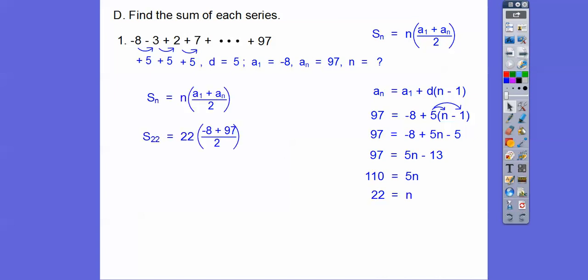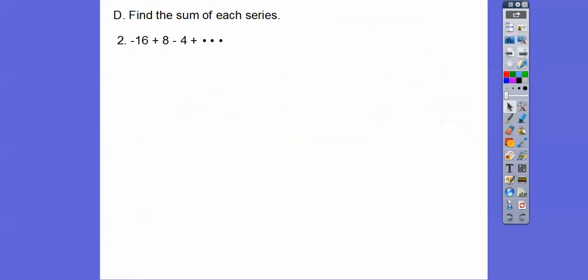We have everything to plug in the formula now. So I like to take half if I can. And I can. I'm going to take half of two is one. Half of 22 is 11. So this is 11. Negative eight plus 97 is 89. So 11 times 89 is 979.